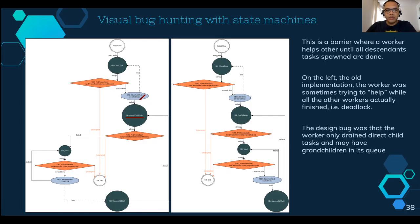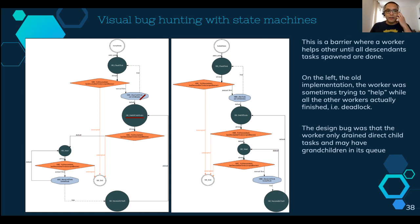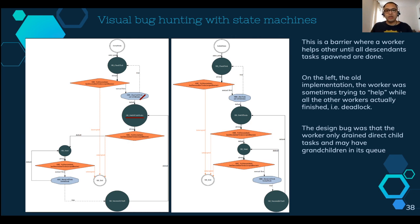It had a bug that took quite a long time to find. The worker was only emptying direct child tasks so it could advance, but grandchildren tasks spawned by direct children were kept in the queue. This led to a deadlock because all other workers were sleeping and the thread was still waiting, trying to steal more work.